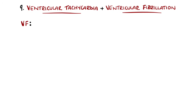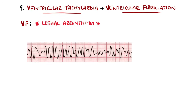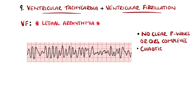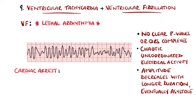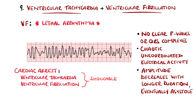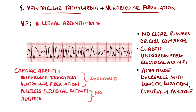Ventricular tachycardia itself can result in cardiac arrest, but may also degenerate into ventricular fibrillation, which is a lethal rhythm if not treated. In VF there are no clear P waves or QRS complexes, and therefore minimal cardiac output. The ECG features chaotic electrical activity of varying amplitudes, with amplitude correlating to duration — as time goes on it reduces until asystole is reached. These two arrhythmias are the two shockable rhythms in cardiac arrest, the non-shockable rhythms being pulseless electrical activity and asystole.